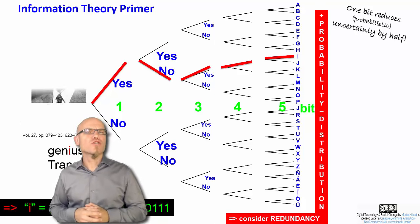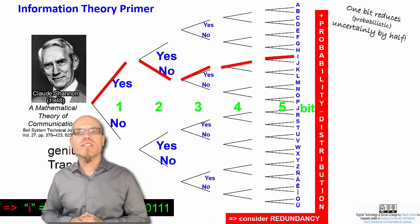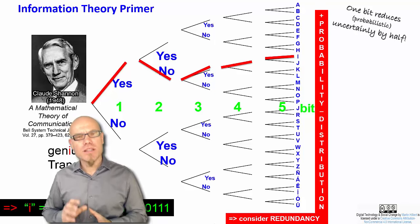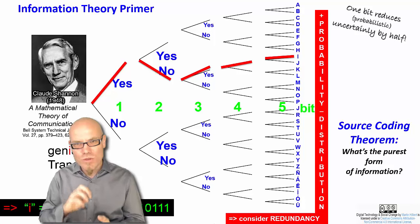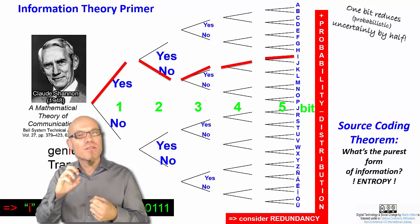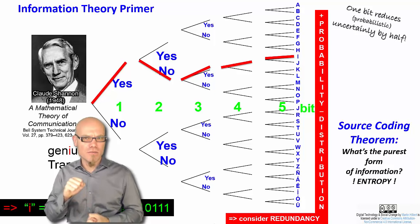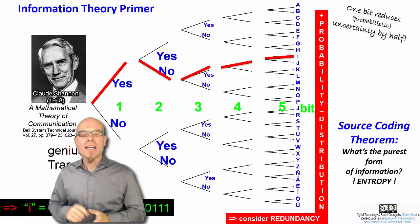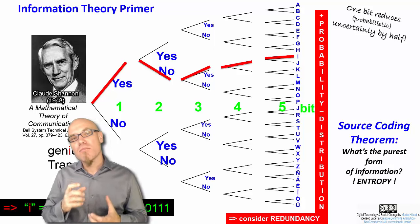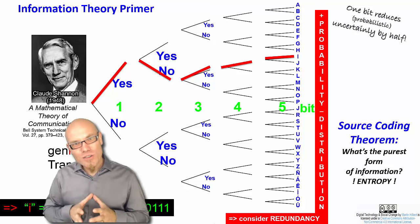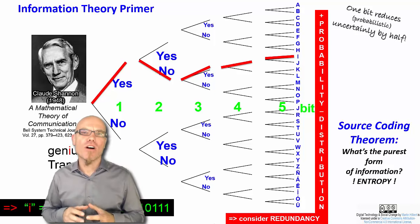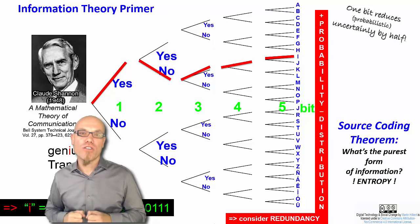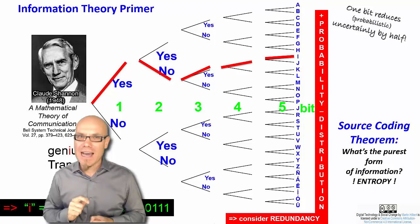Shannon formalized this idea with his source coding theorem. In this theorem, he asked, what is the purest form of information? If we take everything out that's not surprising, every redundancy we take out and compress it and only consider the real surprise, then we get to what he called the entropy of the source. Entropy is the most fundamental metric in information theory. And the unit with which it is measured are bits. What still holds is that one bit is that which reduces uncertainty by half. A bit depends on what you already know, the information you already have. And when this information is reduced by half, then you got one bit of information.